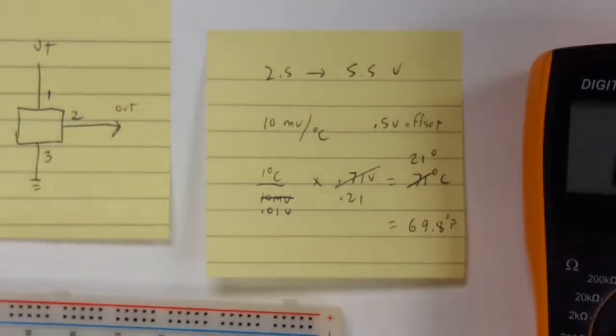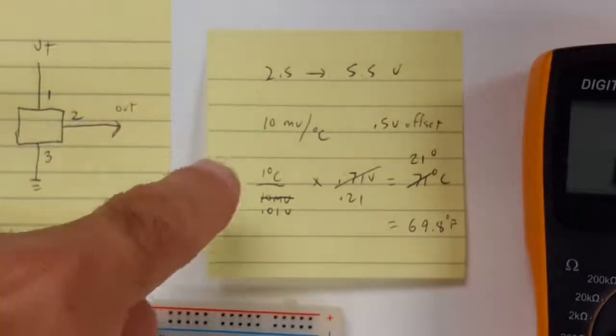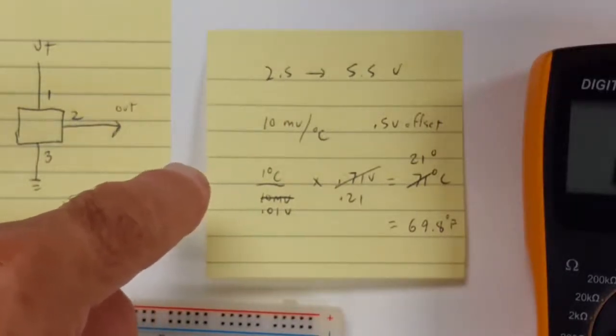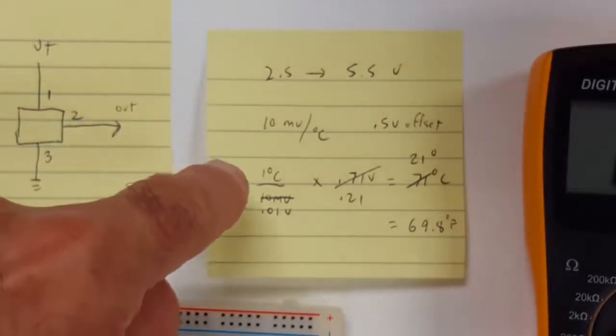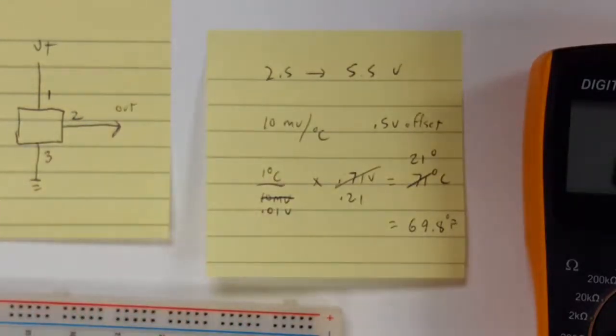The way I've done the math here is we know we have a 10 millivolt per degree change, and if you want to set the problem up a little bit easier, you can say that corresponds to a 1 degree change per 0.01 volt of voltage that you measure.